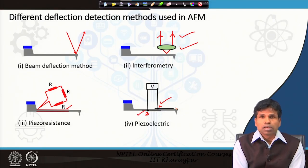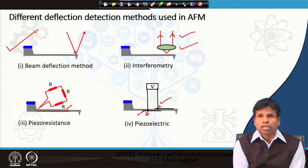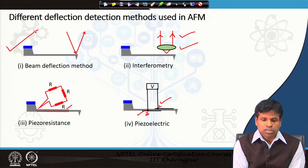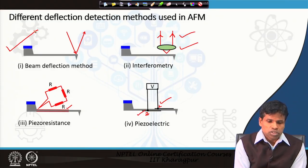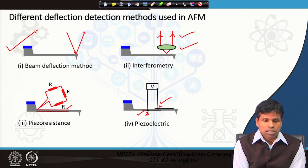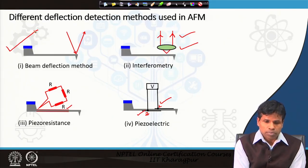As noted, the beam deflection method is the most commonly and most widely used in the atomic force microscopic technique to measure the deflection of the cantilever, thereby knowing the position of the cantilever. This gives us the gap between the sample and the cantilever, thus providing the topography of the sample surface.